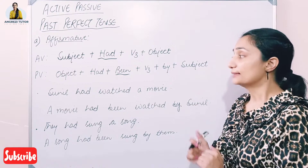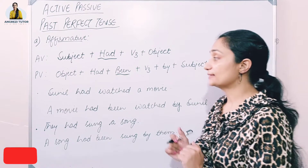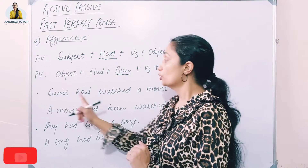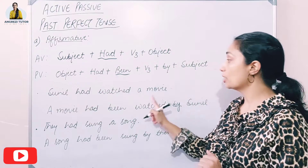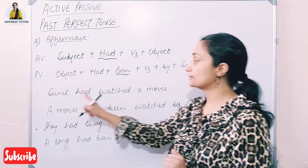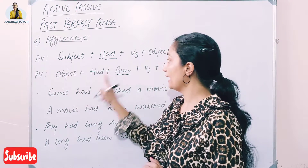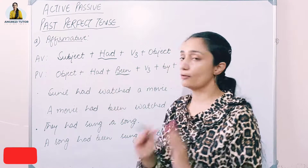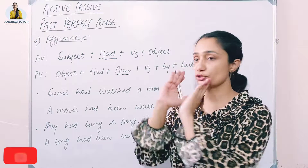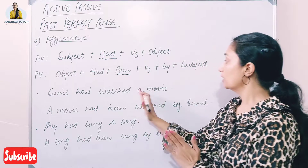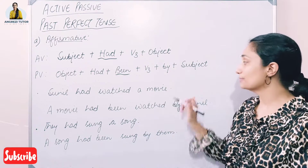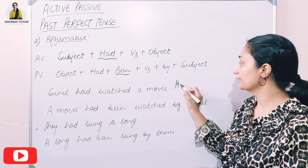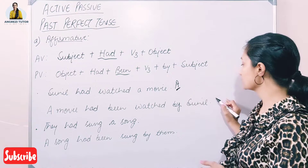For example, the active sentence is: 'Sunil had watched a movie.' Subject is Sunil, helping verb is had, verb third form is watched, and object is a movie. This is a simple active sentence. Now we convert it to passive.